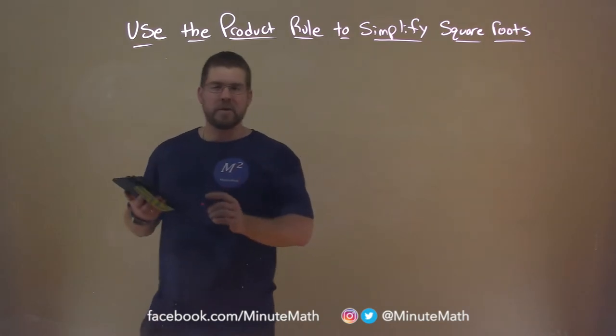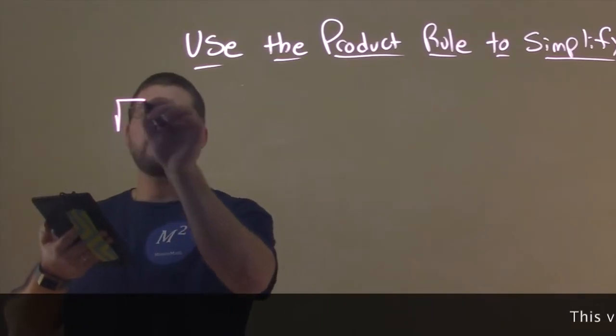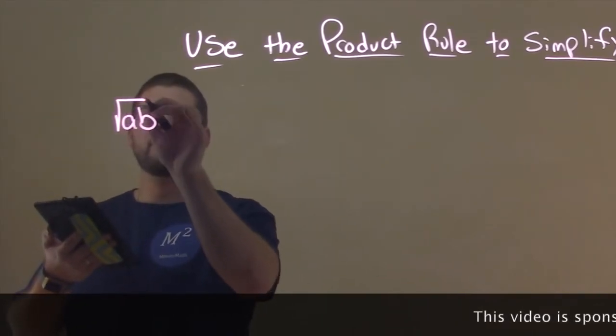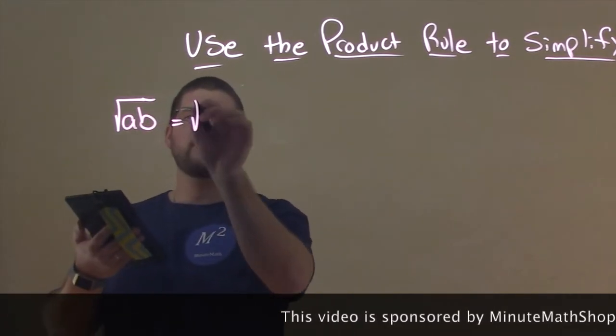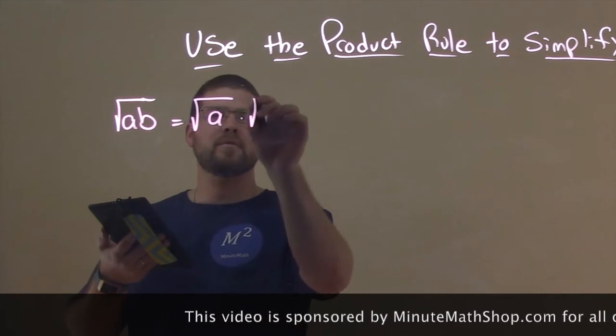And now that and a quick little visual. The square root here of AB, remember that's multiplication, is equal to the square root of A times the square root of B.